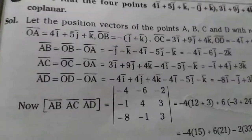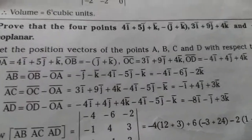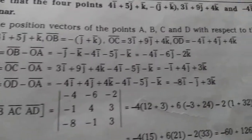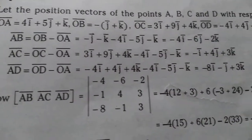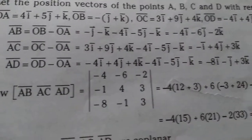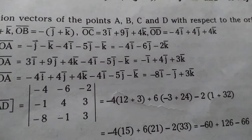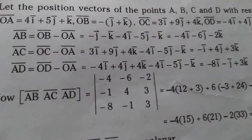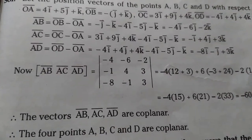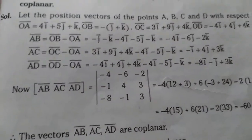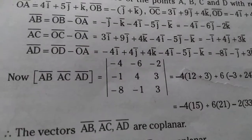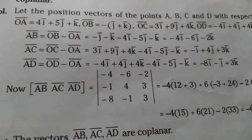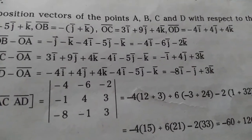Next: check if 4 points are coplanar by finding the determinant. Taking the position vectors OĀ, OB̄, OC̄, OD̄, we find AB̄ = OB̄ - OĀ = -4ī - 6j̄ - 2k̄, AC̄ = -ī + 4j̄ + 3k̄, and AD̄ = OD̄ - OĀ = -8ī - j̄ + 3k̄. Now compute the scalar triple product [AB̄, AC̄, AD̄] using the determinant. If the determinant equals 0, the vectors are linearly dependent (coplanar); if not equal to 0, they are linearly independent.